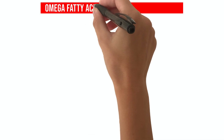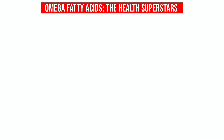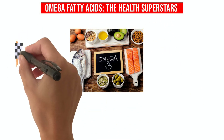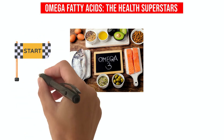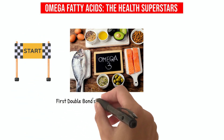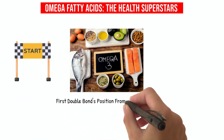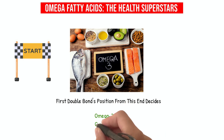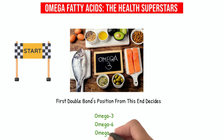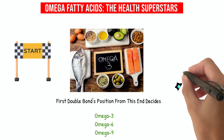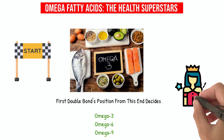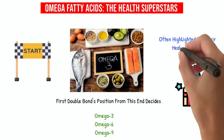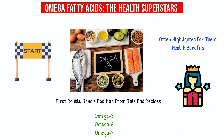Omega fatty acids — the health superstars. The omega end of a fatty acid is like the start line in a race. The first double bond's position from this end decides whether it's an omega-3, omega-6, or omega-9. These omegas are like the celebrities of the fatty acid world, often highlighted for their health benefits.